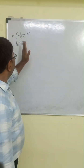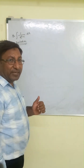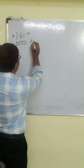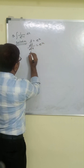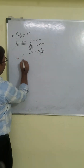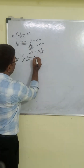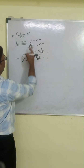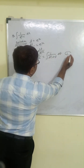Let us see the next question: integration of 1 upon e to the power x minus 1. For this type of question, the technique is: just put t equal to e to the power x. So when we put t equal to eˣ, dt/dx equals eˣ, so dx equals dt upon eˣ. We can write easily 1 upon t minus 1 with eˣ as t, so 1 upon t into t minus 1 dt. This is the first equation.